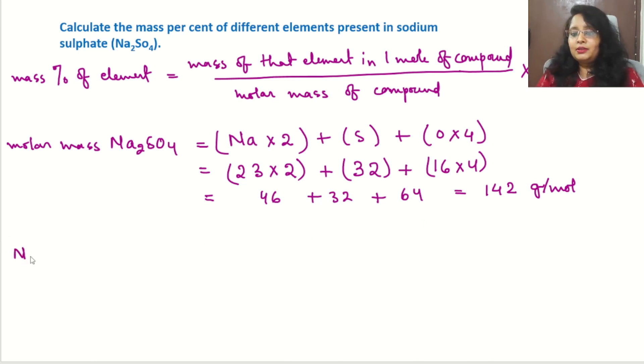Mass percent of sodium in the compound: we will put the mass of that element in one mole of compound. The mass of sodium in one mole of compound is 46, so we write 46 divided by molar mass of the compound, which is 142, multiplied by 100. So we will get the answer after calculation: 32.39%.